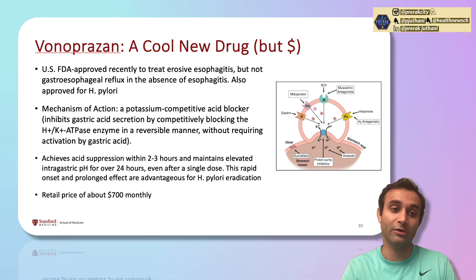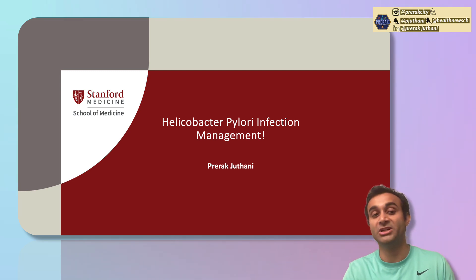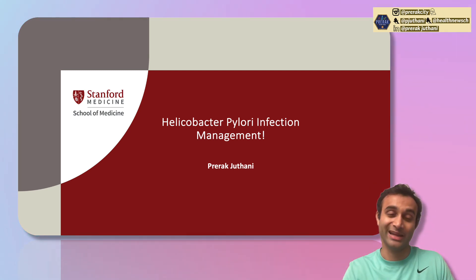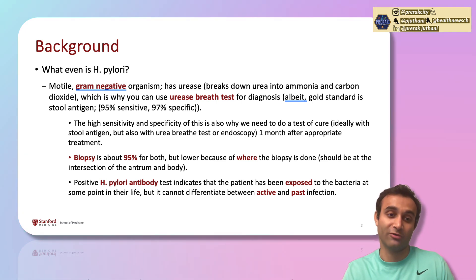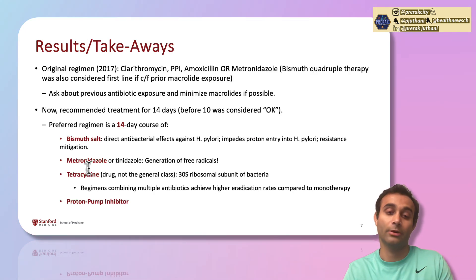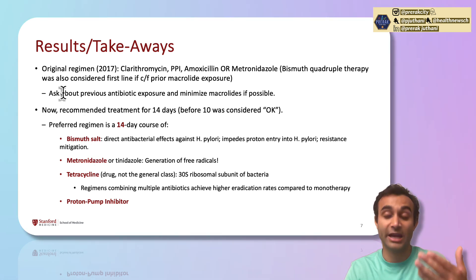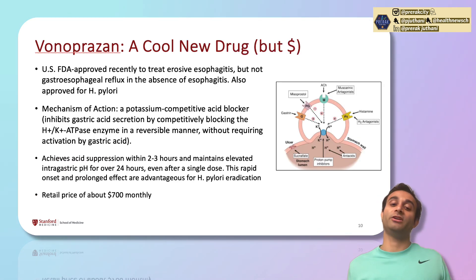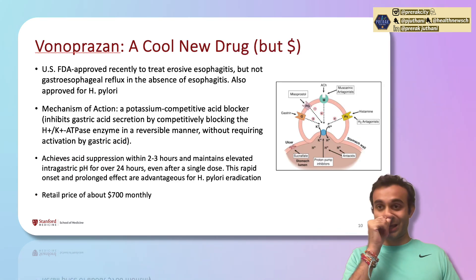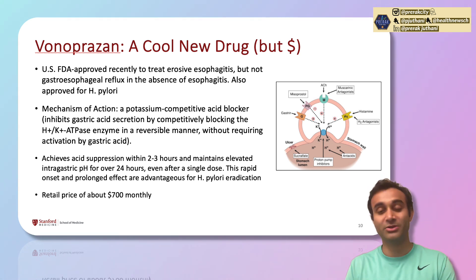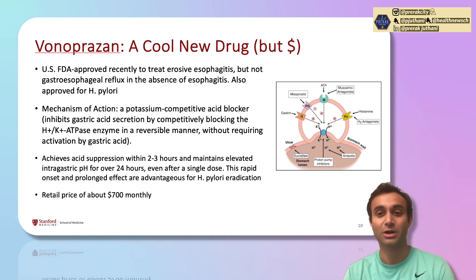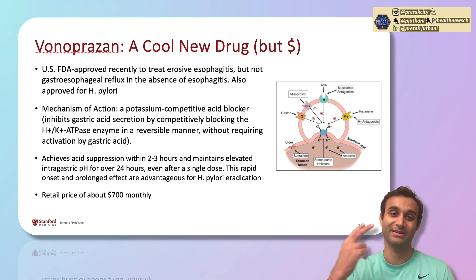Let's recap what we went over. This presentation covered diagnosing H. pylori with the stool antigen test, treating it with bismuth quadruple therapy for 14 days, and then checking a test of cure with a repeat stool antigen. And if you want to impress your friends, know that there's a brand new drug — vonoprazan — all about potassium channel blockade. If you enjoyed this video, please drop a like, comment, share, and subscribe. I'll see you all in the next one. Peace.